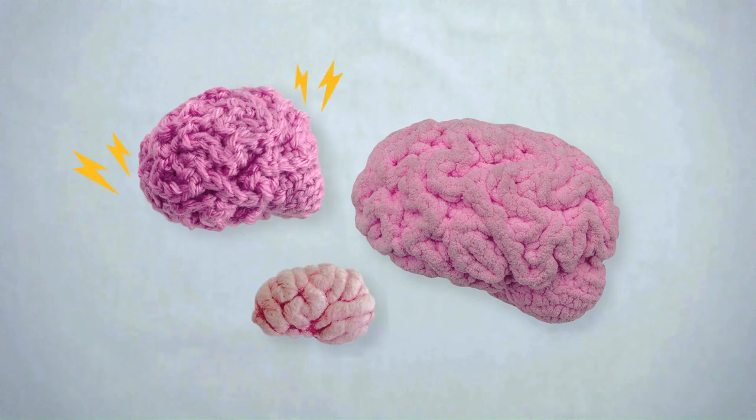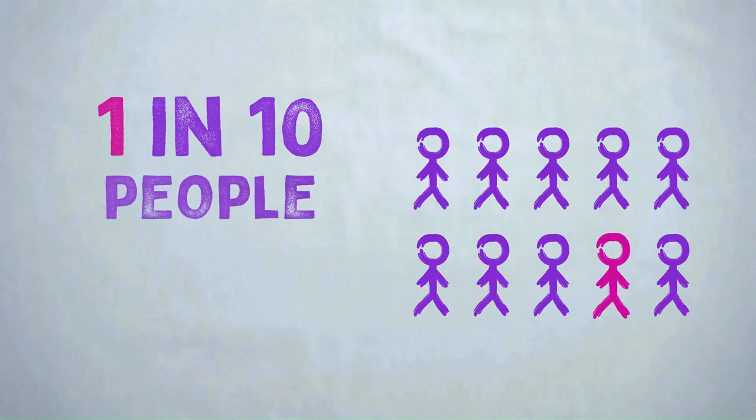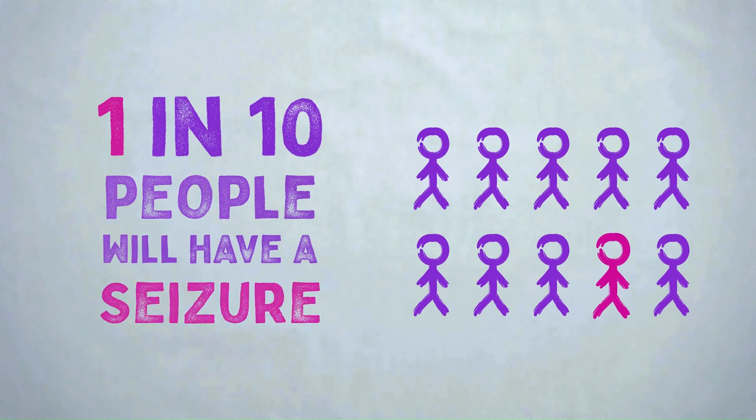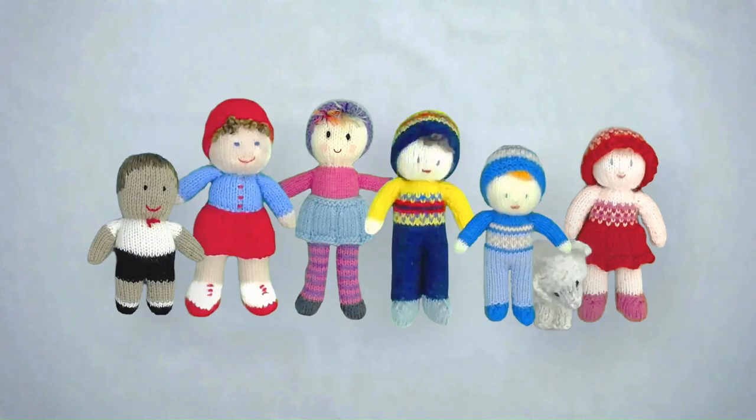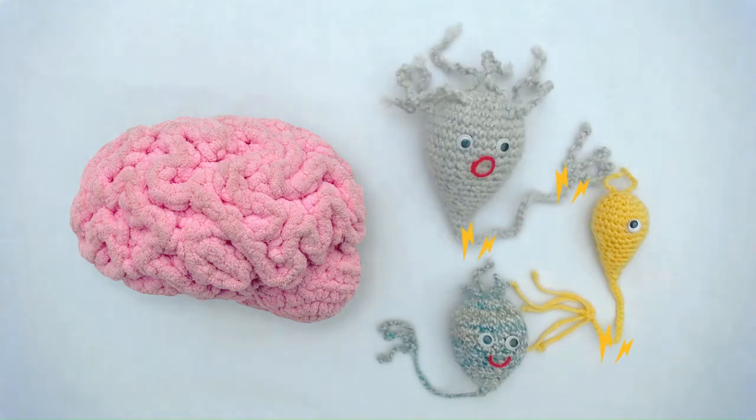Any brain can have a seizure. In fact, one in every ten people will have a seizure at some time in their life. Just like the people that have them, not all seizures look the same. It will depend on where in the brain those cheeky neurons are located.